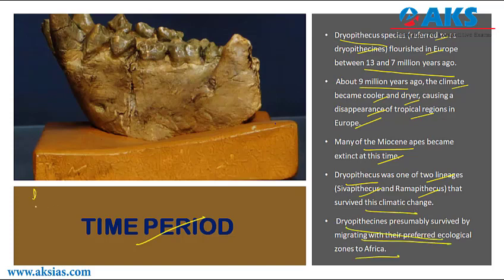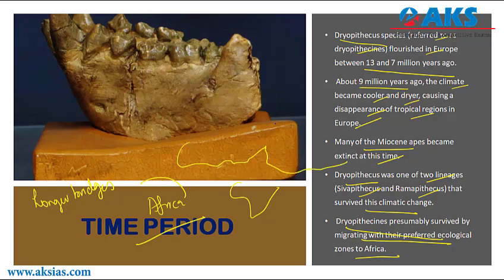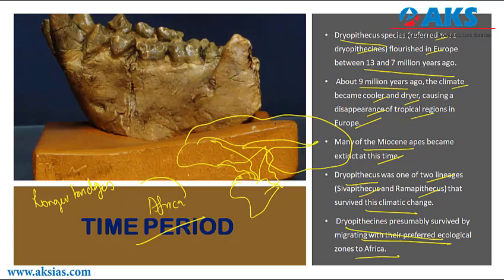Land bridges developed between Africa, Europe, and Asia, and through these pathways this species migrated from Africa to Europe as well as Asia. This explains their spatial distribution across much of the world. Land bridges created the paths through which they distributed to other parts of the world.